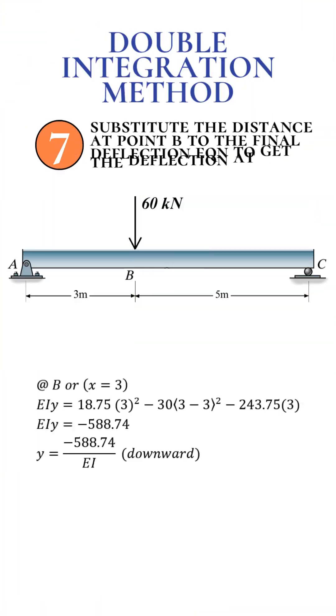Step 7: Find the deflection at point B. Finally substitute the X coordinate of point B into the deflection equation. The result is YB equals negative 588.74 divided by EI. This indicates a downward deflection at point B.